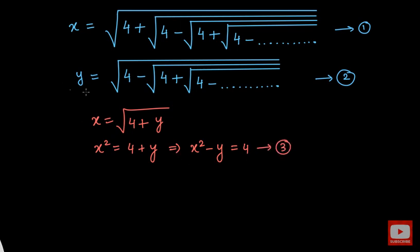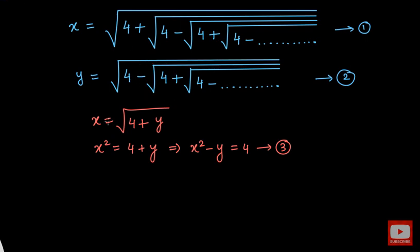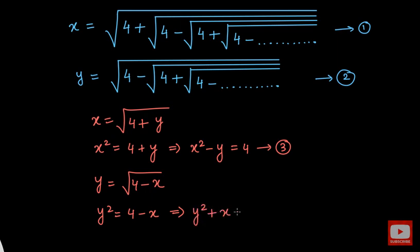Now let us go to equation number 2. We have y equal to square root of 4 minus square root of 4 plus square root of 4 minus square root of 4. The inner part being highlighted is nothing but x from equation number 1. So we substitute to get y equal to square root of (4 minus x). Squaring both sides: y squared equals 4 minus x. Bringing minus x to the left side: y squared plus x equals 4. This is equation number 4.